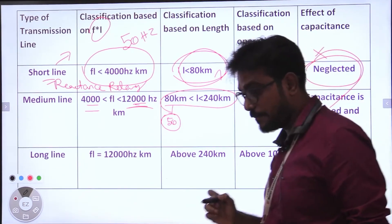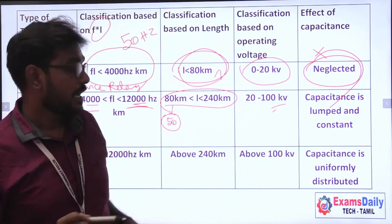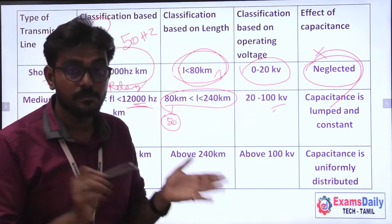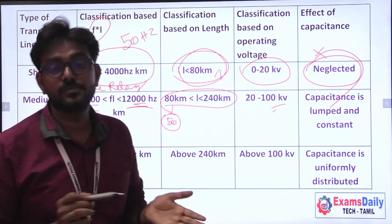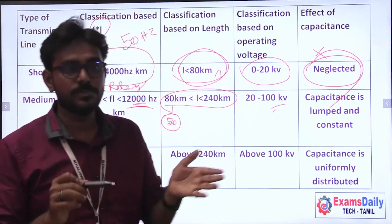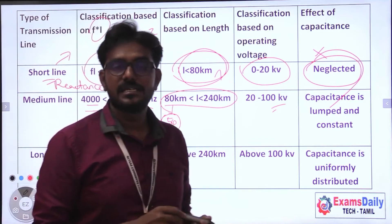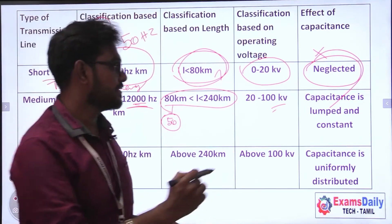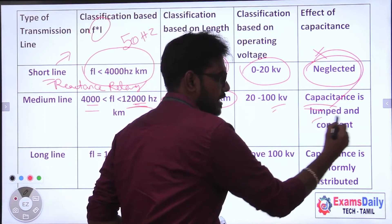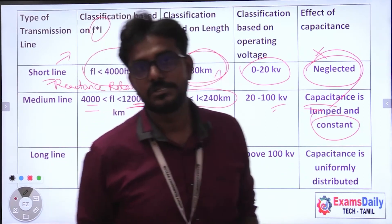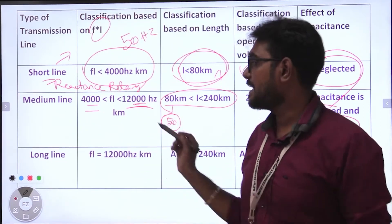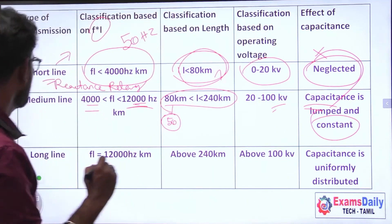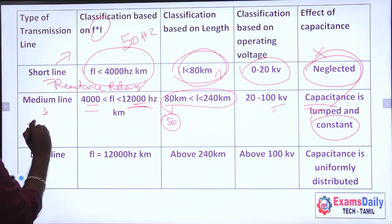For medium transmission line, capacitance is lumped — it uses a lumped network rather than a distributed network. There is a constant capacitance effect. For protection, if you look at the medium transmission line relay, we use the impedance relay.